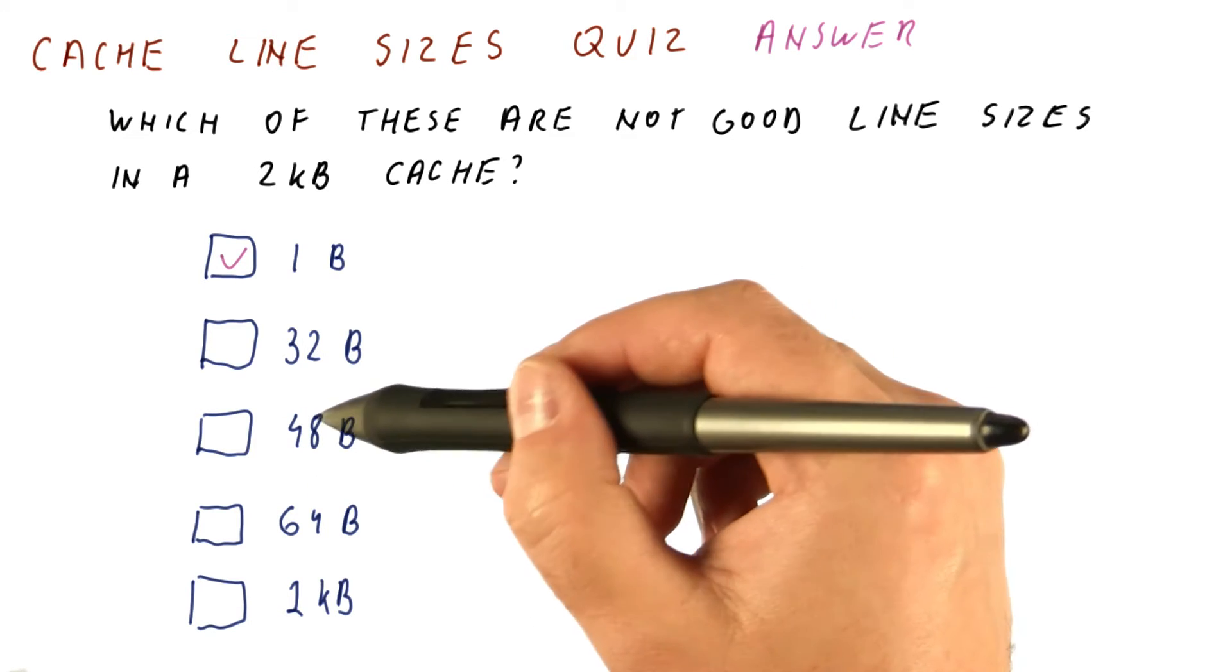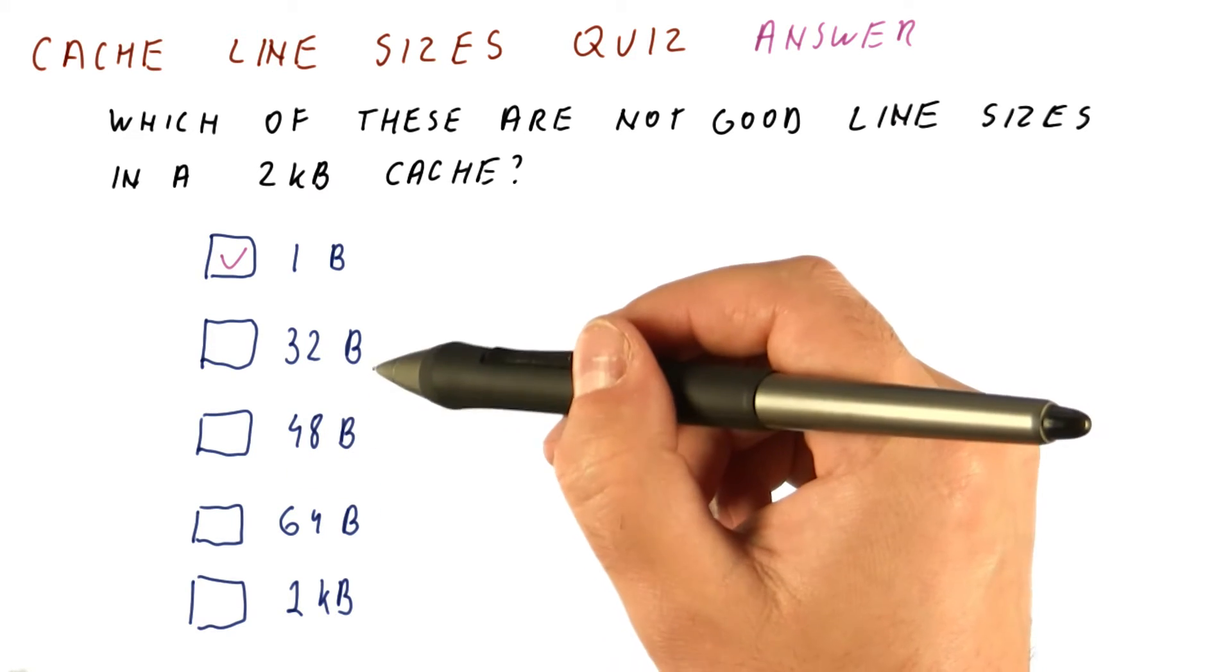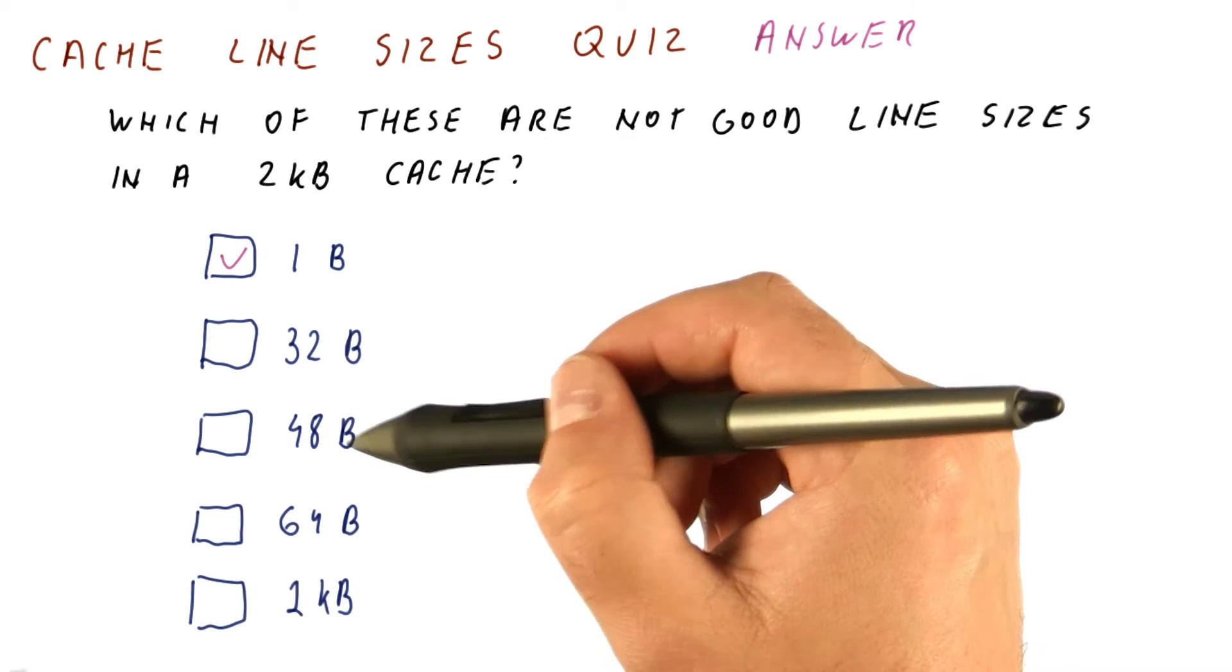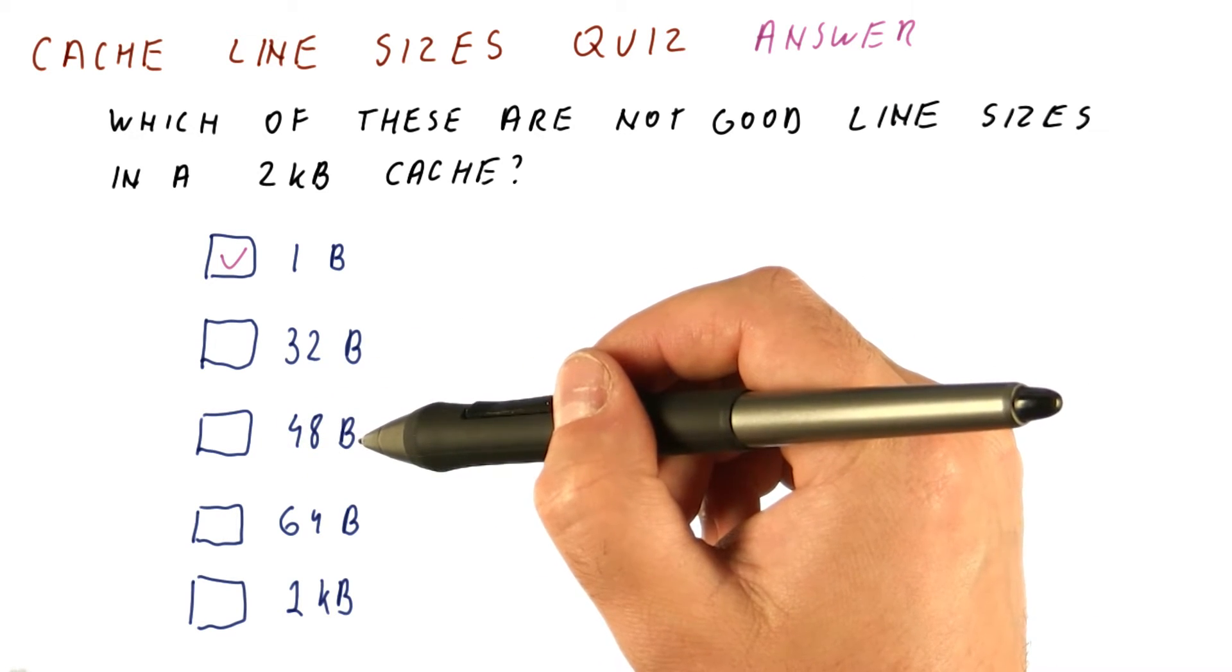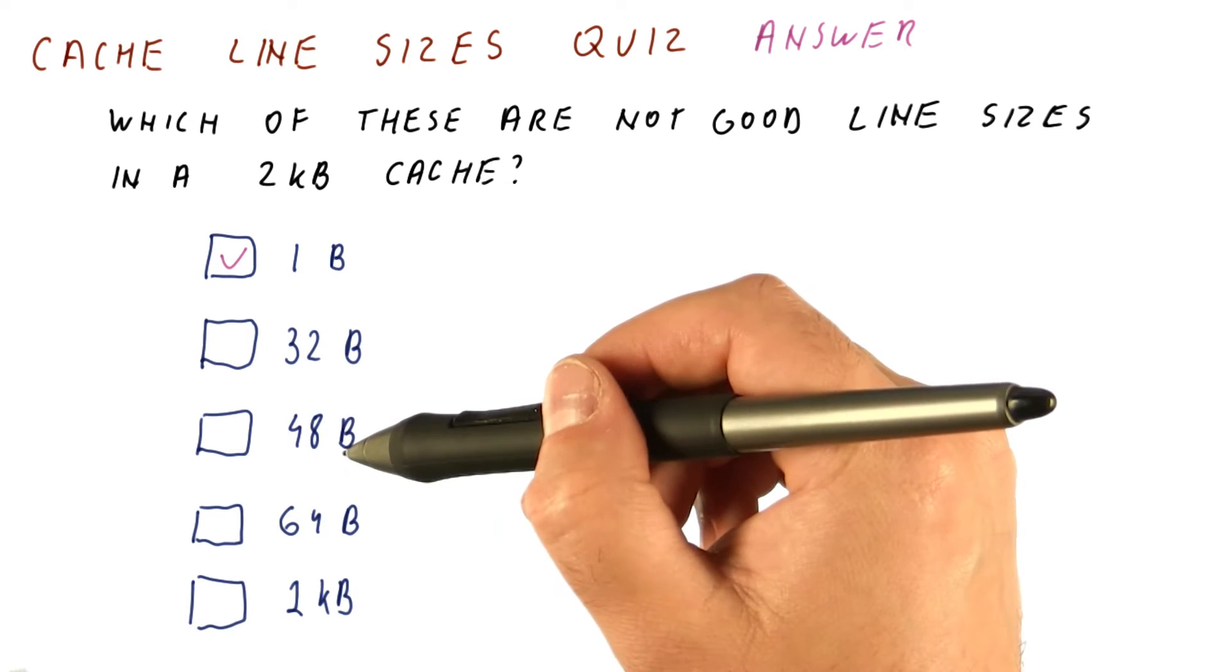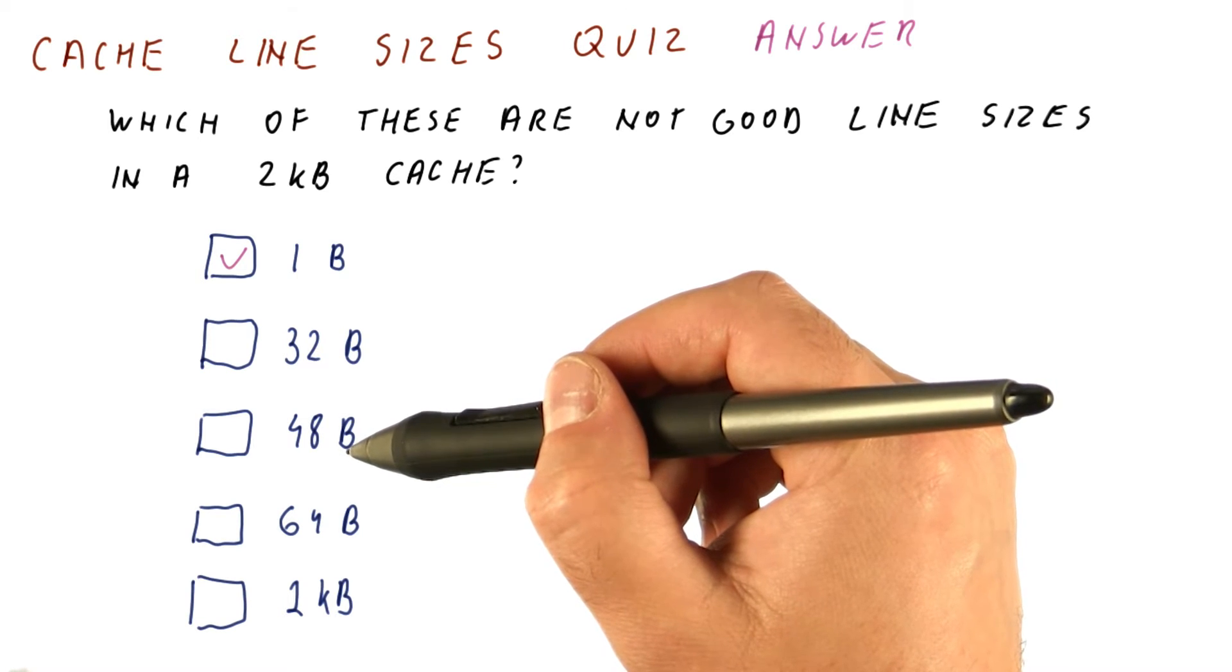48 bytes is a good size as far as it's not too large or too small, but it's not a power of two. So if we are given an address and we need to find out what is the block that contains that address, we need to divide by 48, which is much more complicated than dividing by a power of two.